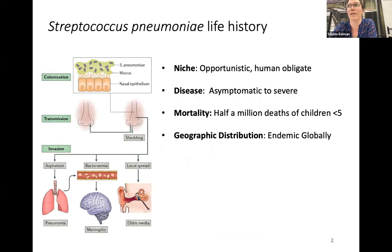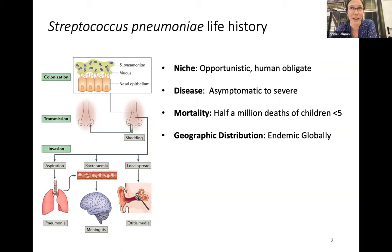First, a bit about what Streptococcus pneumoniae is. It's a gram-positive opportunistic bacteria. It is human-obligate, so it only resides in humans. It lives in the nasopharynx of both children and adults, and it can be completely asymptomatic in the majority of people, but can go on to cause severe disease — local infection like otitis media, an ear infection, or more severely pneumonia and meningitis. It is responsible for half a million deaths of children under five every year, and it's the leading cause of death from lower respiratory tract infection worldwide.